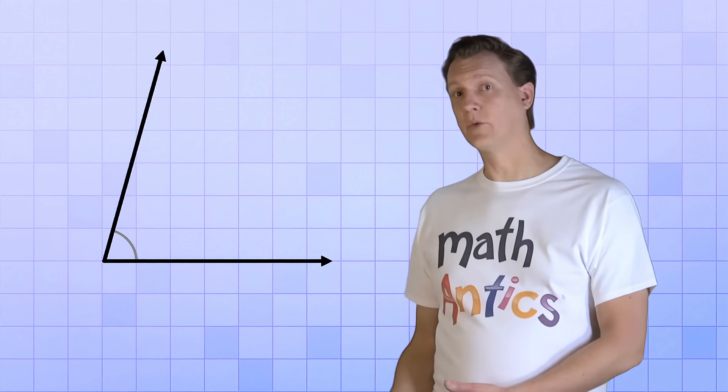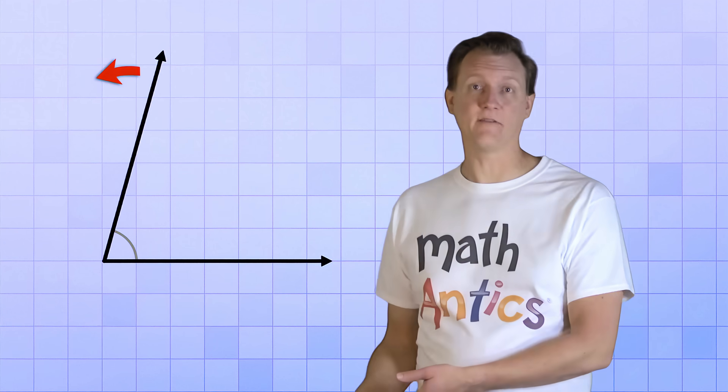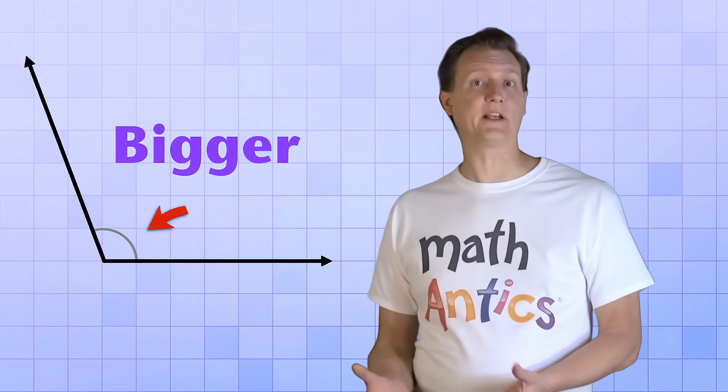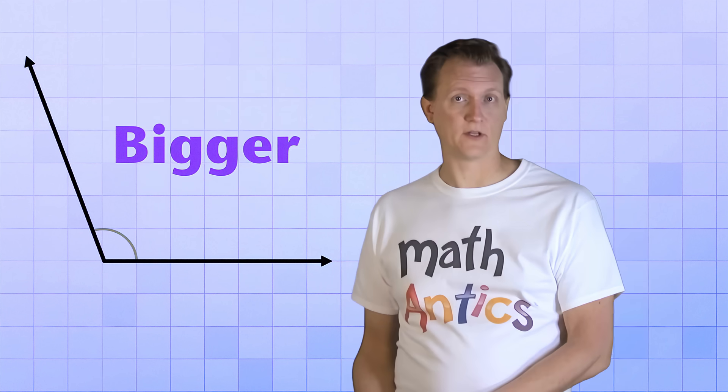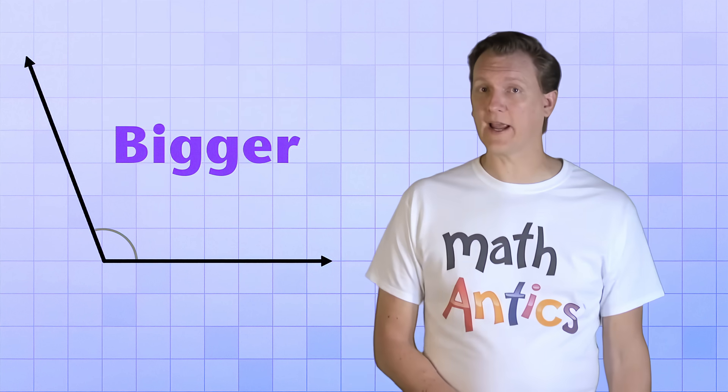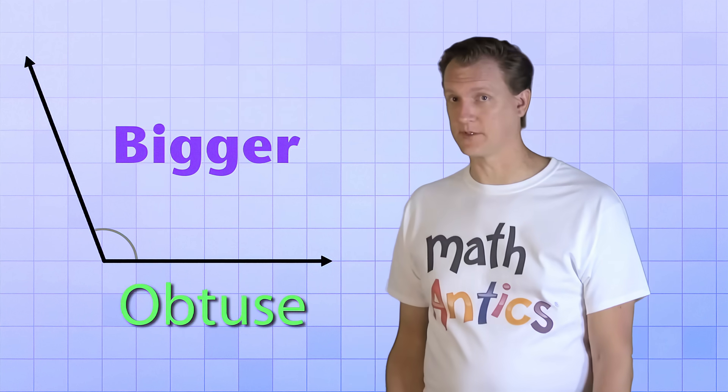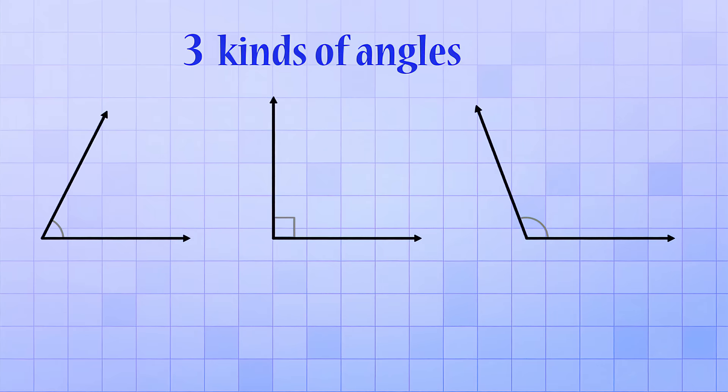On the other hand, if we rotated our ray to the left instead of the right, we would get an angle that's bigger or greater than a right angle. Angles that are greater than right angles are called obtuse angles. So there are three main kinds of angles that you need to know about: right angles, acute angles, and obtuse angles.